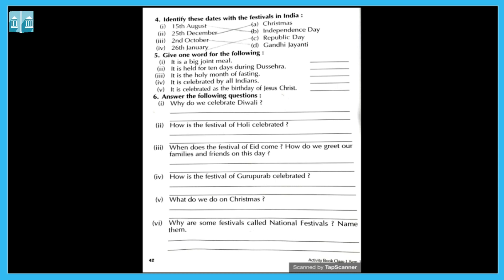Now question five: give one word for the following. First one: it is a big joint meal served at Gurudwaras where many people eat together.